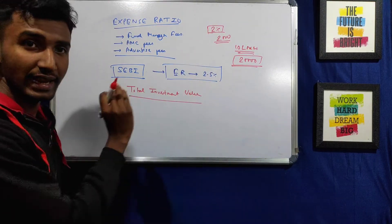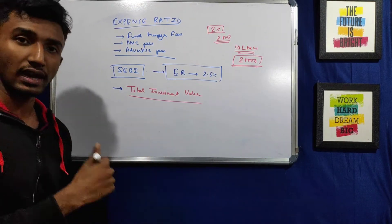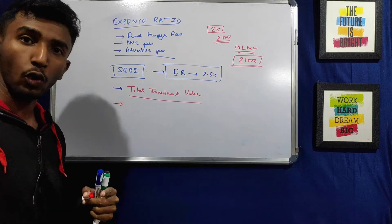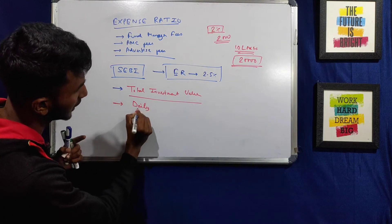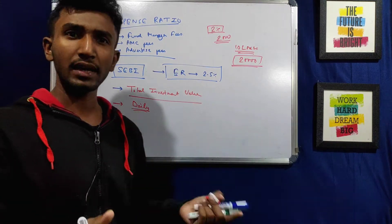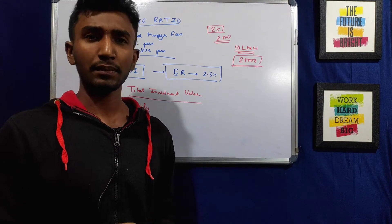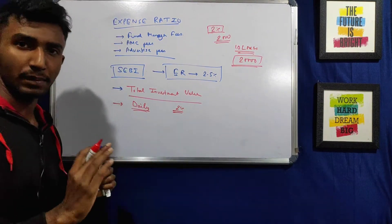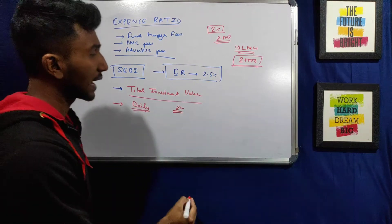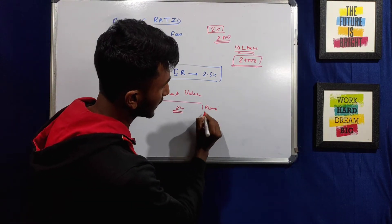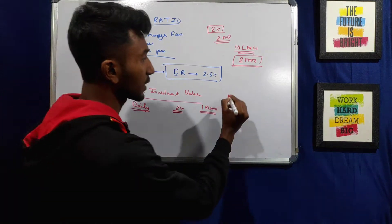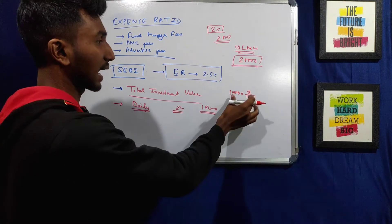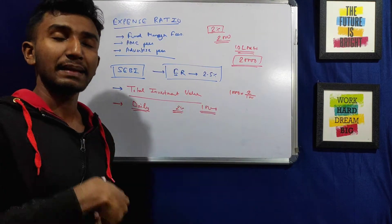The expense ratio is calculated as a daily charge. This means it is charged on your investment value daily. For example, if a mutual fund has an expense ratio of 2%, and suppose you have a certain amount invested, then the 2% is divided by 365 days, and that daily percentage is charged each day. So it is basically a daily charge on the investment value.